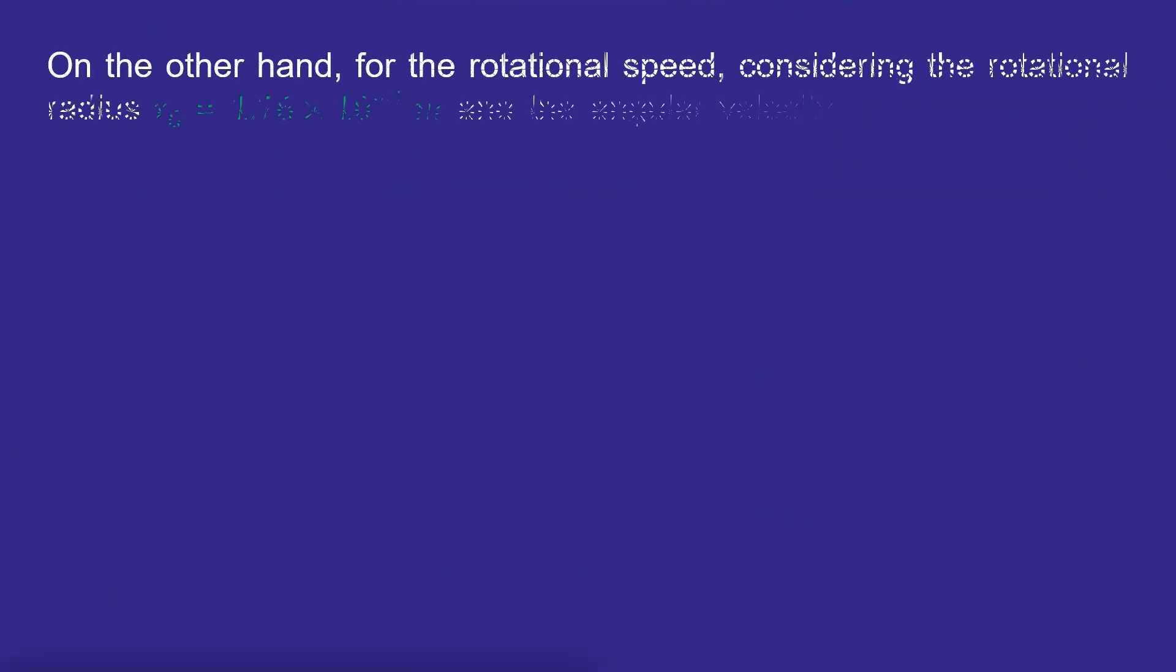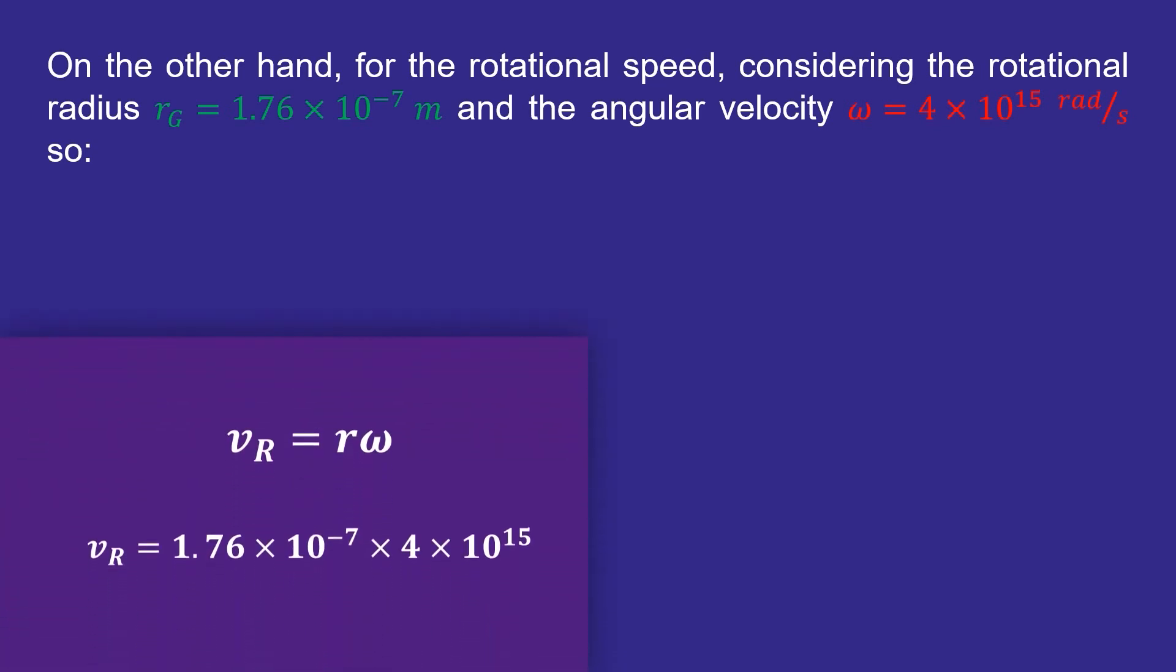On the other hand, for the rotational speed, considering the rotational radius r of g equals 1.76 times 10 to the power of minus 7 and omega equals 4 times 10 to the power of 15.